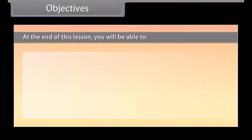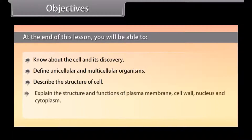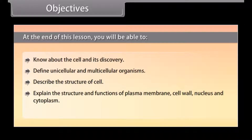Objectives. At the end of this lesson you'll be able to: know about the cell and its discovery; define unicellular and multicellular organisms; describe the structure of the cell; explain the structure and functions of plasma membrane, cell wall, nucleus, and cytoplasm.